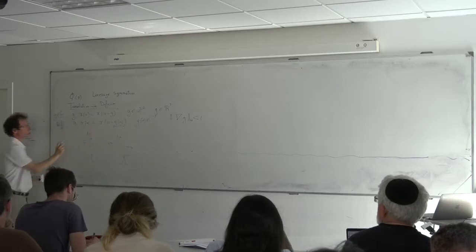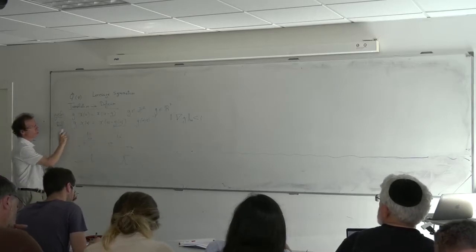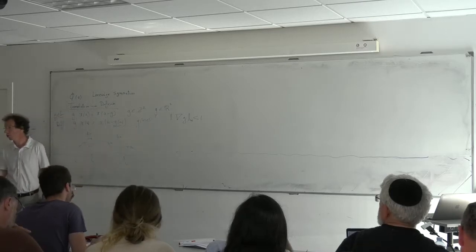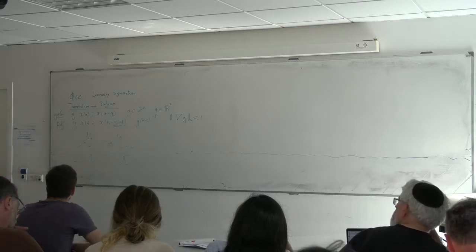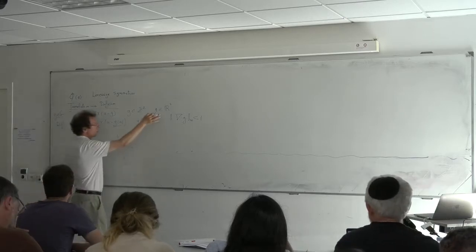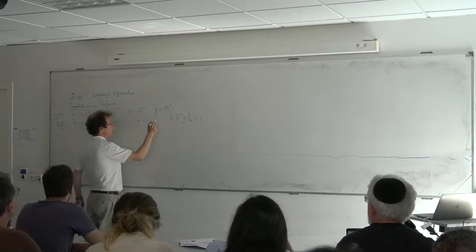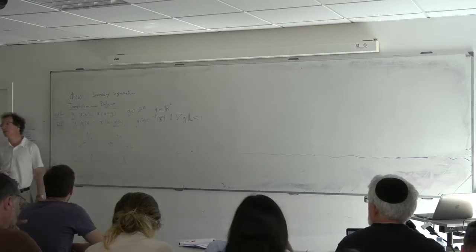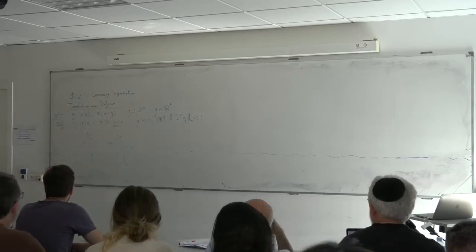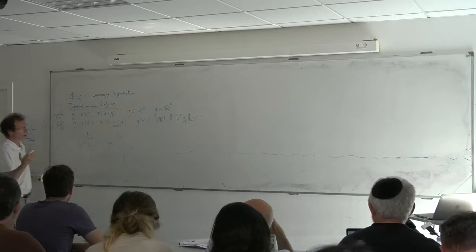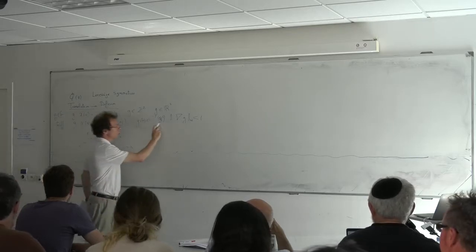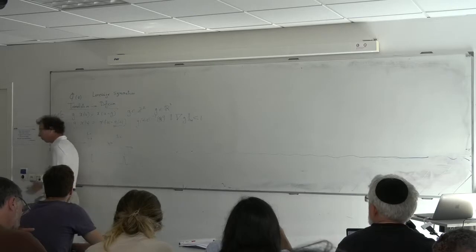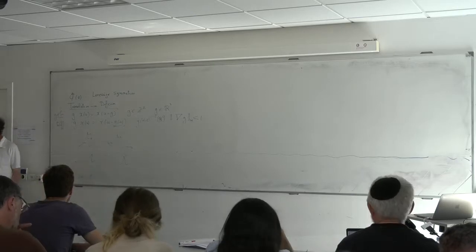These are two examples. The huge difference: the translation group in R² has two generators — G belongs to a two-dimensional space. But the diffeomorphism group is infinite-dimensional, because the group element is the set of all continuously differentiable functions defined over R², whose Jacobian, because I've put a restriction to small diffeomorphisms, is more than one — so this is an infinite-dimensional space.